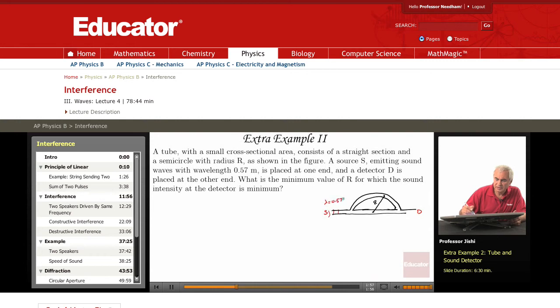And there's a detector D here. What is the minimum value of R for which the sound intensity at the detector is a minimum?